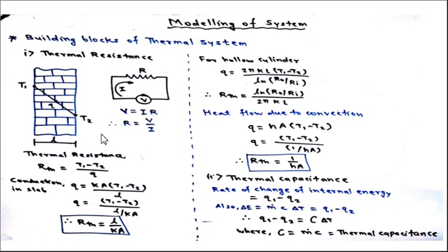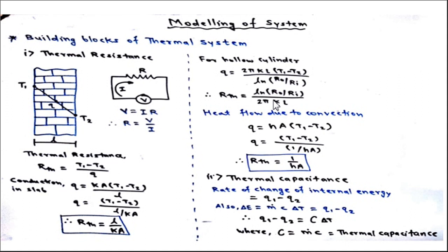There are different modes of heat transfer: conduction, convection, and radiation. For conduction in a slab, heat transfer rate q = kA(T₁ - T₂)/L, where k is thermal conductivity, A is surface area, and L is thickness. This means thermal resistance R_th = L/(kA). For a hollow cylinder, heat transfer is given by q = 2πkL(T₁ - T₂)/ln(r_o/r_i), where r_o and r_i are outer and inner radii, k is thermal conductivity, and L is length. Thermal resistance for a hollow cylinder = ln(r_o/r_i)/(2πkL).